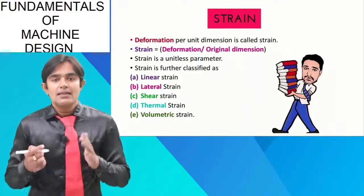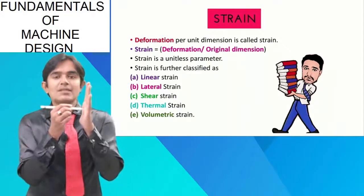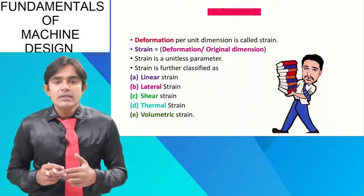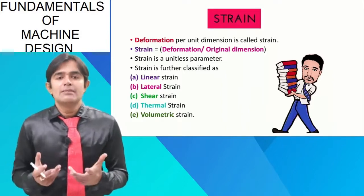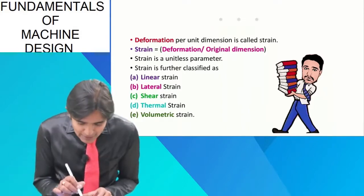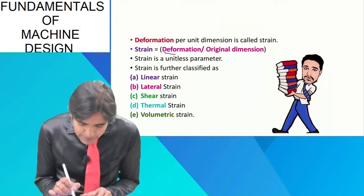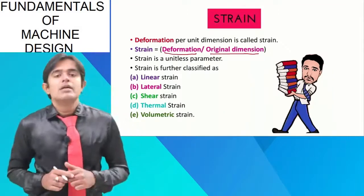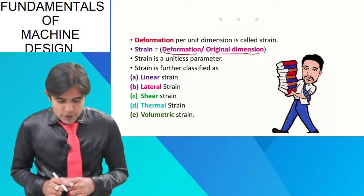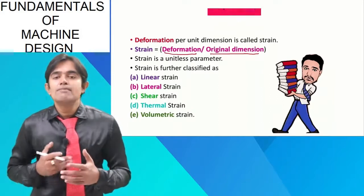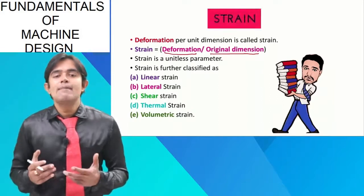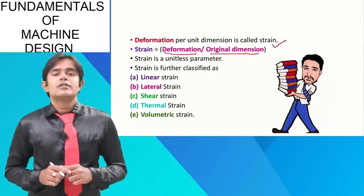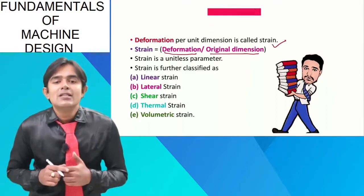We have experienced that if a force is applied, a body will undergo deformation — some change is going to take place. Strain is nothing but deformation upon original dimension, so deformation per unit dimension is called strain. Strain is a unitless parameter.